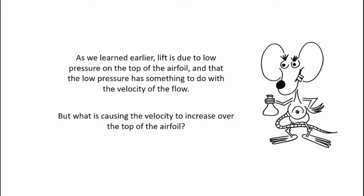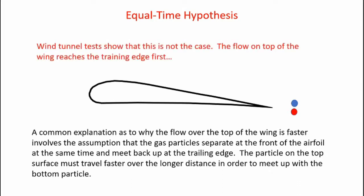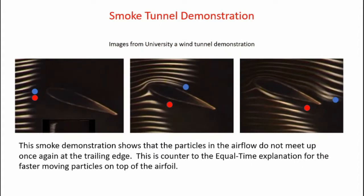Lift is due to low pressure on top of the airfoil, and that low pressure has something to do with the velocity of the flow. But what's causing the velocity to increase over the top of the airfoil? One common explanation is the equal time hypothesis, which says when two particles encounter an airfoil they split up and must meet at the back end at the same time. Since the top of the airfoil is curved and a longer distance, the particle over the top must move faster. However, wind tunnel tests show this is not the case — the flow on top of the wing actually reaches the trailing edge first. Smoke tunnel images confirm that particles going over the top move faster and arrive at the trailing edge sooner, debunking the equal time hypothesis.